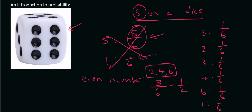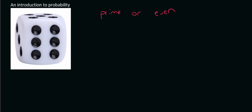What is the chances of rolling a prime number? Remember, prime numbers are numbers such as two, three, and five. The number one is not a prime number. So to roll a prime number, there's three of them out of a total of six, so that's one out of two.